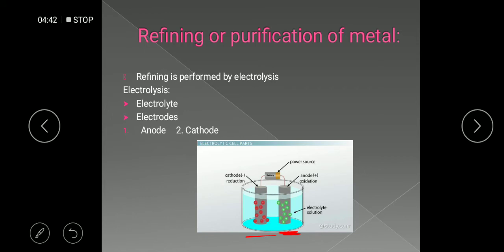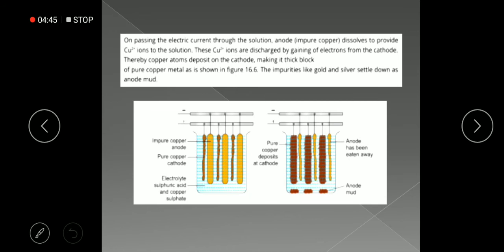As the electric current passes through the solution, the anode — which is impure copper — starts dissolving. You can see that the impure copper is present in bulk and looks like a thick rod. As it dissolves, it produces copper ions. These copper ions are positively charged, so they move towards the cathode. At the cathode they gain electrons, become neutral, and deposit onto it. So the cathode gets thicker as pure copper is deposited on it.